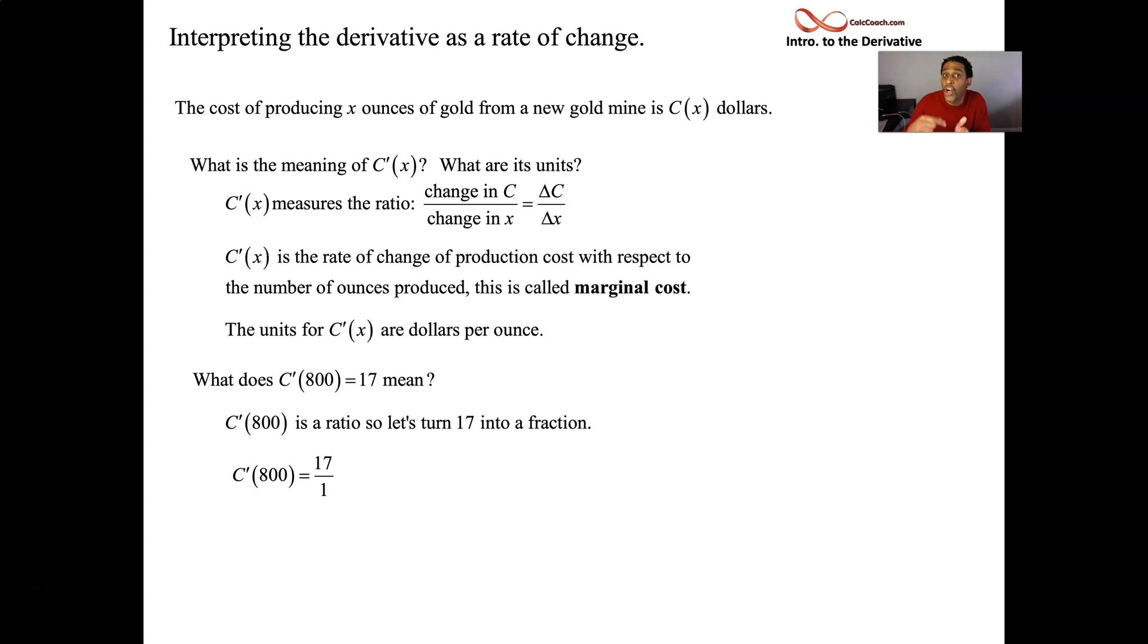Officially, the cost of producing that 801st ounce of gold is $17. You're producing at 800 already. We don't know the cost for that. But we do know that the cost of producing one more would make whatever that cost was go up by 17. And so increasing by one will increase cost by 17.